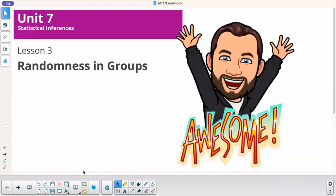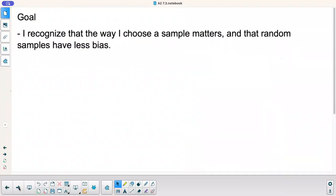Welcome to Math, Algebra 2, Lesson 7.3 called Randomness in Groups. Our goal today is to recognize that the way I choose a sample matters and that random samples have less bias.